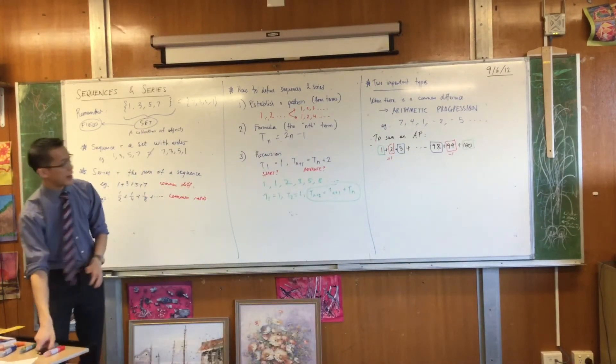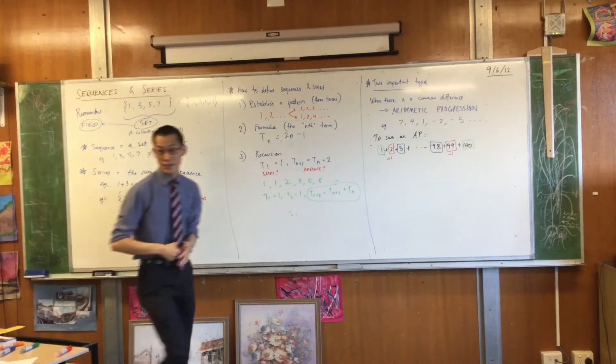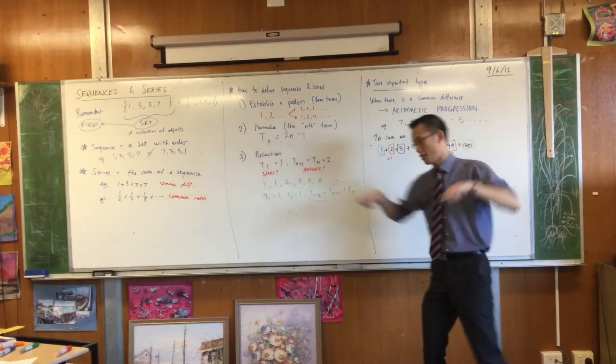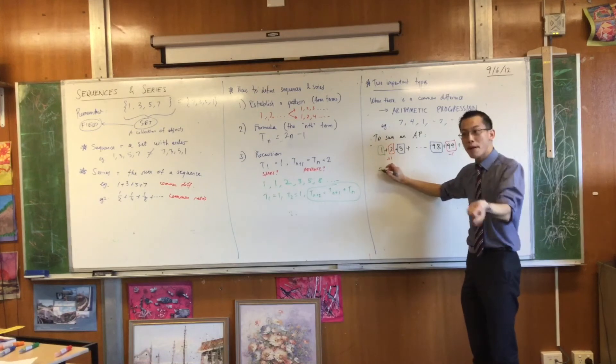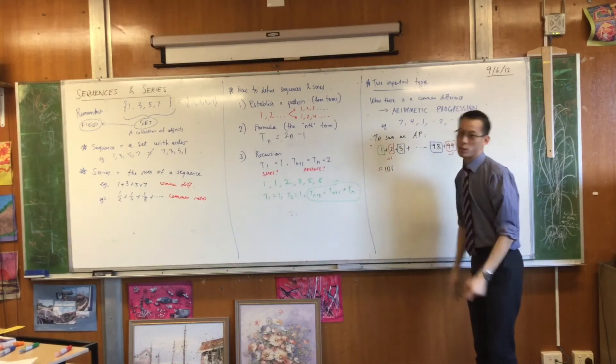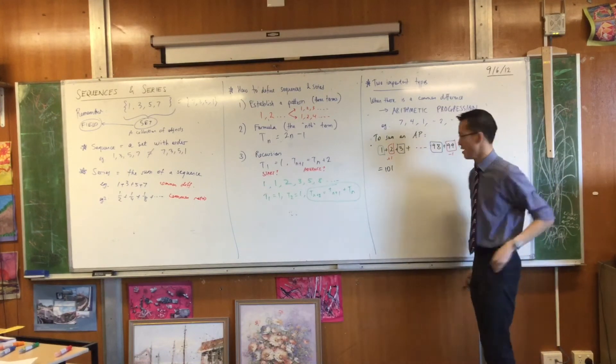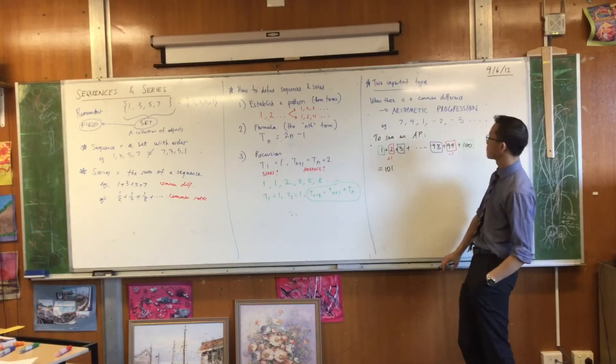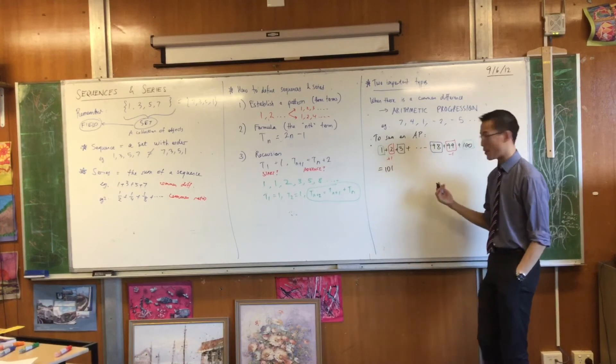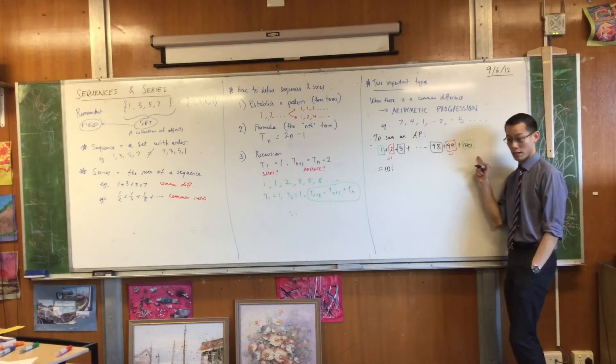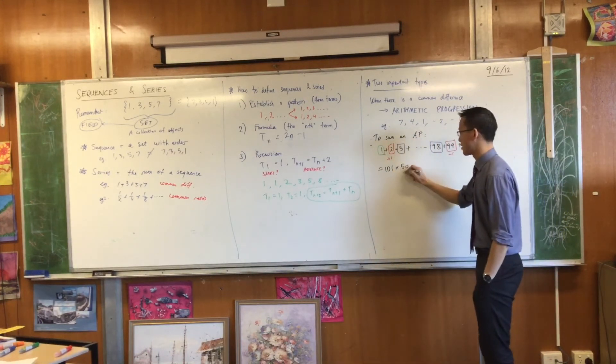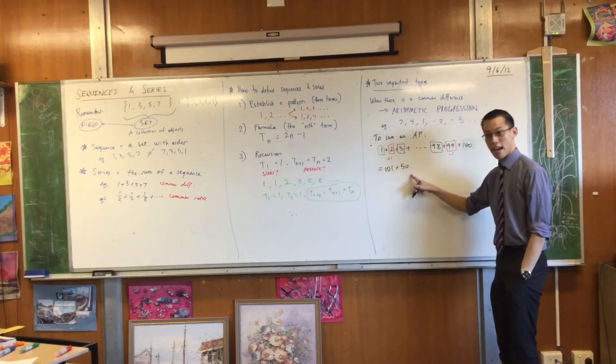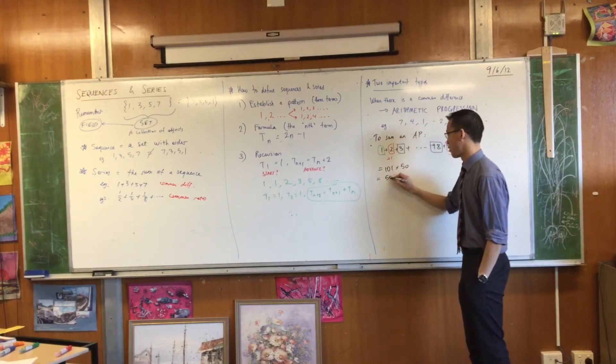And you can keep this going forever. So therefore, you can work out, if you pair up every term with its opposite one on the end, then they all sum to a hundred and one, all the pairs. So all you really need to know is, how many pairs are there? There's going to be exactly 50 pairs, because there's a hundred numbers in total. So you just have to take the sum of each pair, find out how many pairs, and then there's your answer.